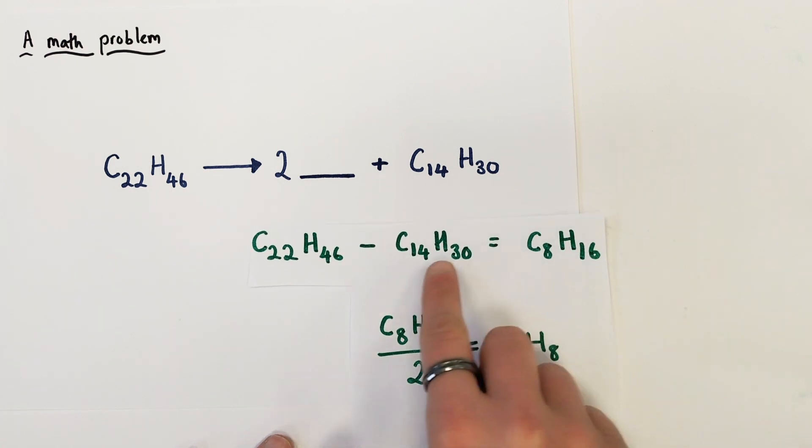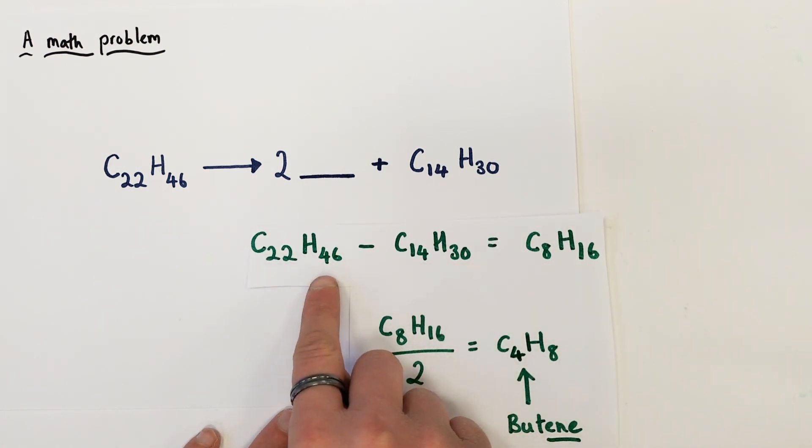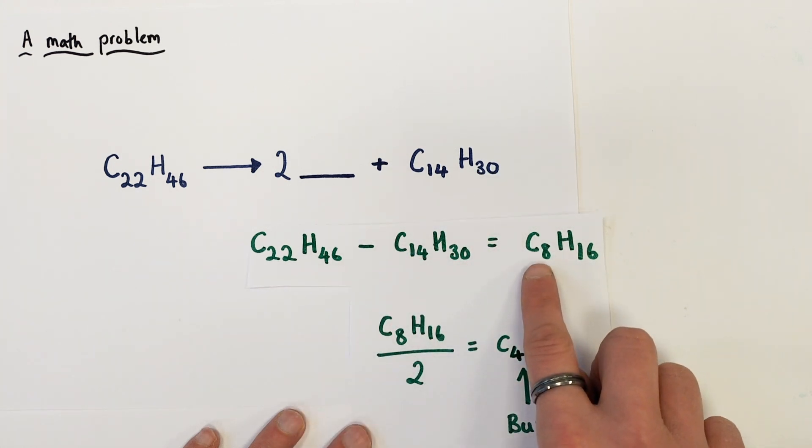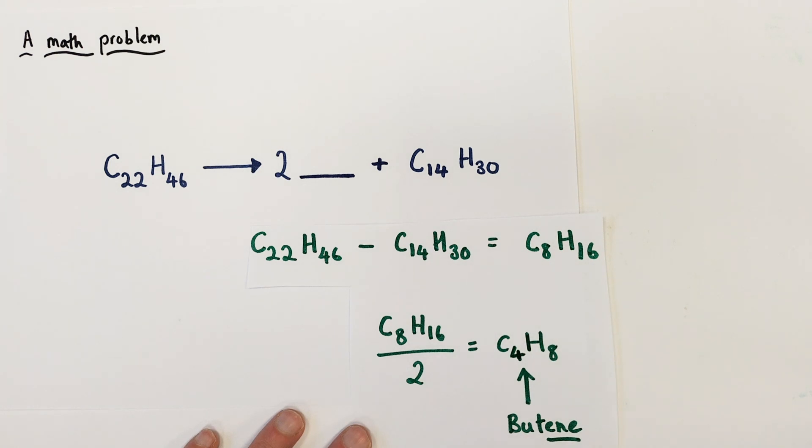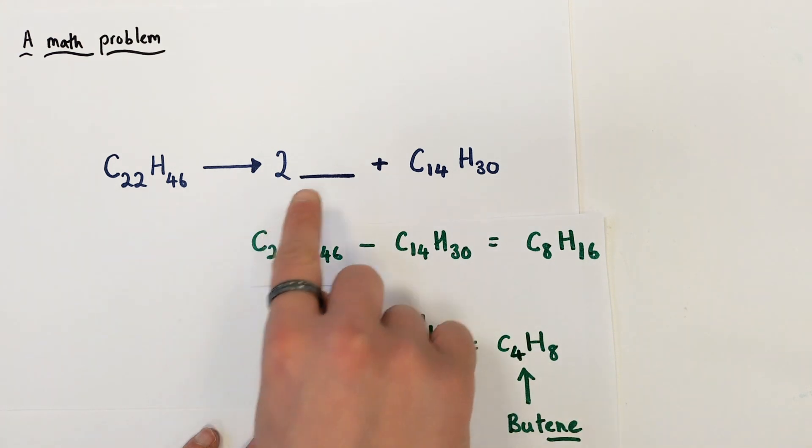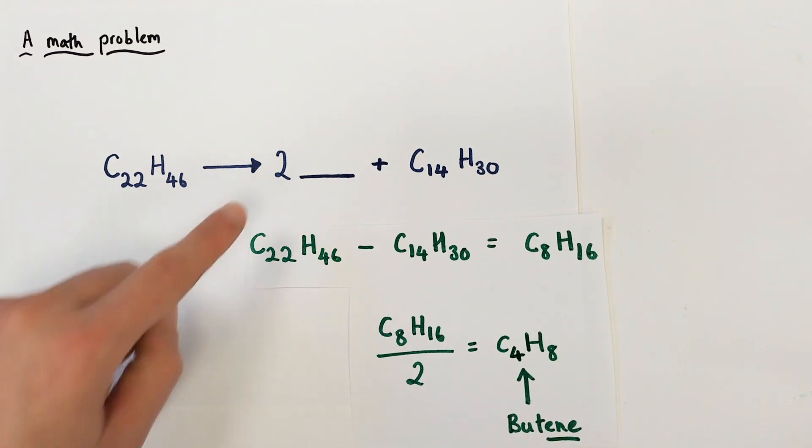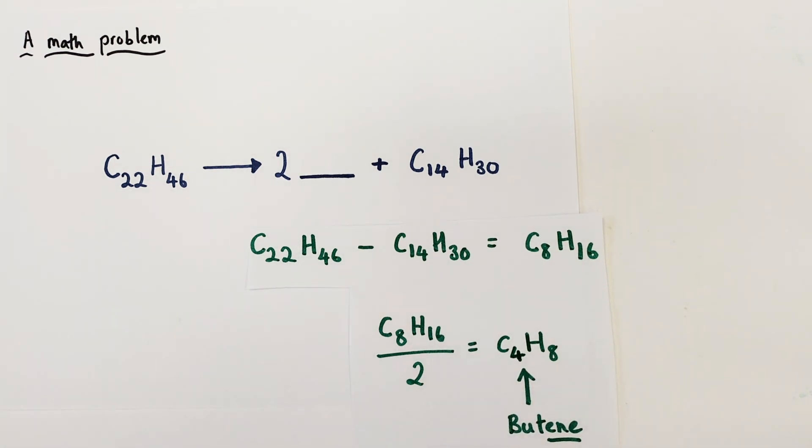First thing you do is you take away the known product from the starting material. So the C22H46, we take away the known C14H30 leaving us with eight carbons and 16 hydrogens which must encompass our two molecules. Because there are two molecules we're going to divide that by two, meaning that each molecule present must have the formula C4H8, which means we have two molecules of butene missing in this arithmetic problem.